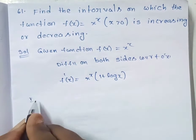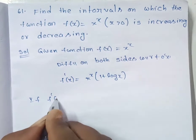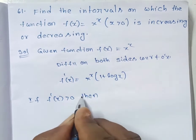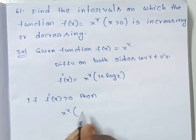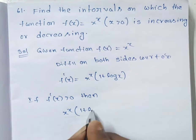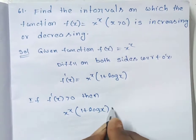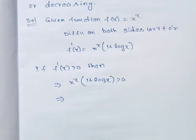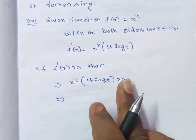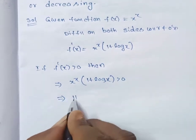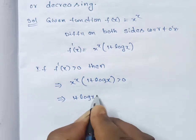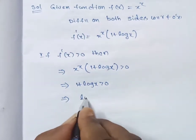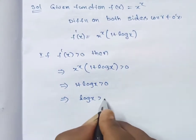If f'(x) is greater than 0, then x^x (1 + log x) > 0. Since x^x > 0 for all x > 0, this means 1 + log x must be greater than 0. This implies log x is greater than minus 1.